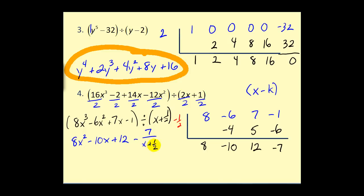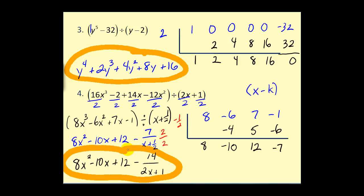This is the correct quotient, but in an odd form since the original problem had a divisor of two x plus one. We can multiply both the top and bottom by two over two, which results in fourteen in the numerator and two x plus one in the denominator — giving the correct final quotient. Whether you do synthetic division this way or revert to long division is your preference; personally I would probably just do long division.